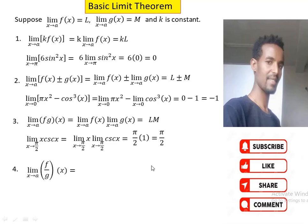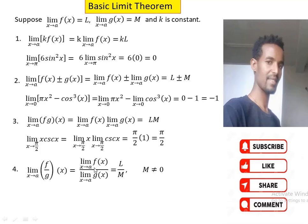Rule 4 is called the quotient rule. The limit of f(x)/g(x) as x approaches a equals the limit of f(x) as x approaches a, over the limit of g(x) as x approaches a. Since the limit of f(x) is L and the limit of g(x) is m, we have L over m, whenever m is different from 0.